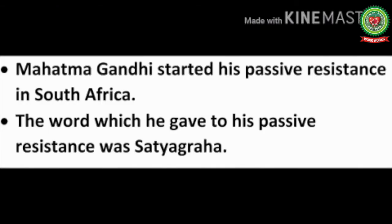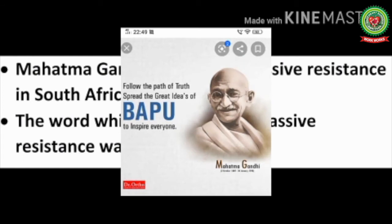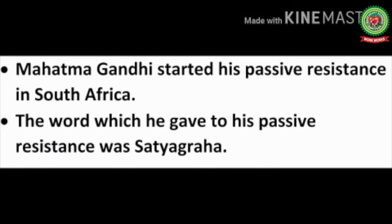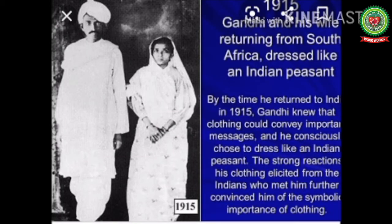Mahatma Gandhi started his passive resistance in South Africa and gave it the name Satyagraha. He later distinguished the two, explaining that passive resistance can include the use of physical force, whereas Satyagraha means to fight for something with the help of truth and non-violence.